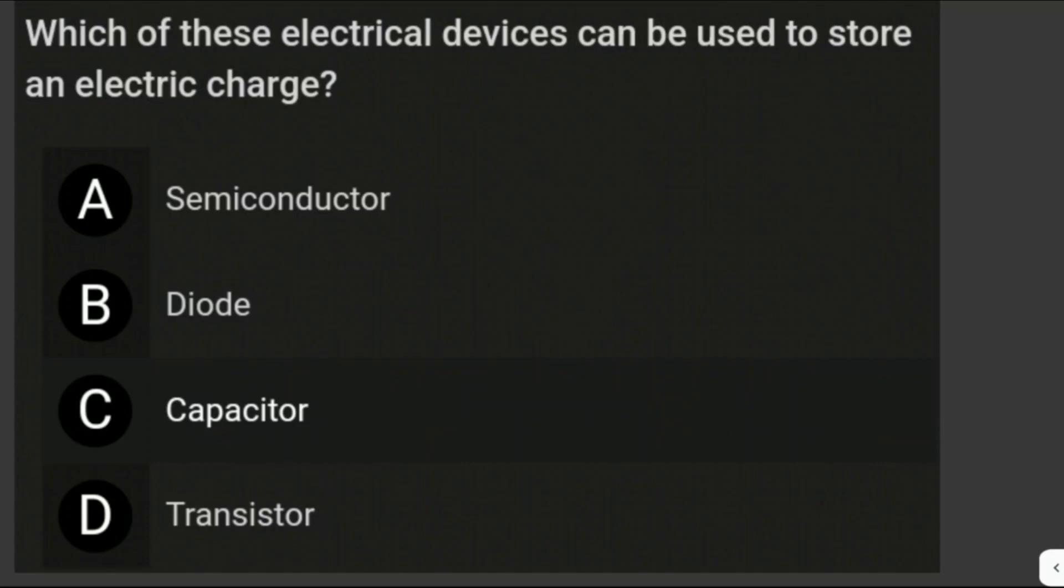Which of these electrical devices can be used to store an electric charge? We're given choices: semiconductor, diode, capacitor, and transistor. The answer should be capacitor. Because capacitors store electric charge as well as energy. They consist of one or more pairs of metal conducting plates that are separated by an insulator, and our insulator is called the dielectric. An electric charge builds up when a voltage is applied across the plates, which creates an electric field. The answer is letter C, capacitor.